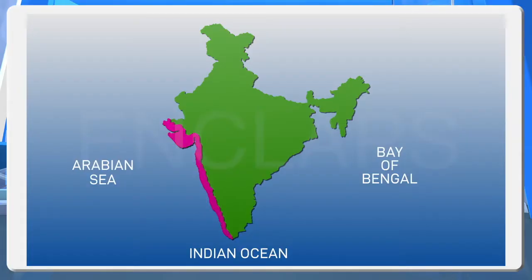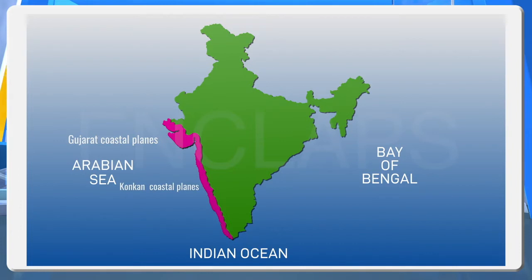The coastal plains of India can be divided into two: Western coastal plains and Eastern coastal plains. The Western coastal plain is the area between the Arabian Sea and the Western Ghats. It extends from the Rann of Kutch to Kanyakumari. The Western coast can be further divided into three: Gujarat coastal plains in the North, Konkan coastal plains in the Central, and Malabar coastal plains in the South.